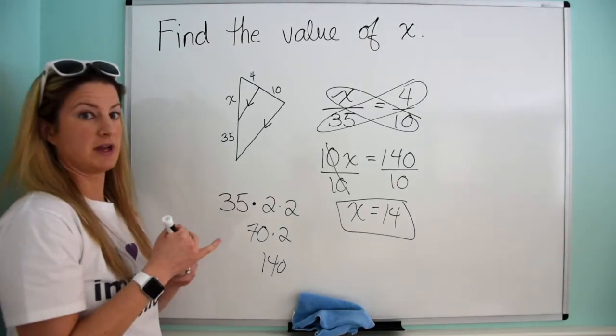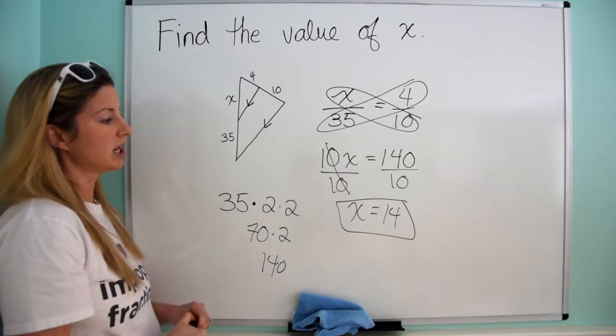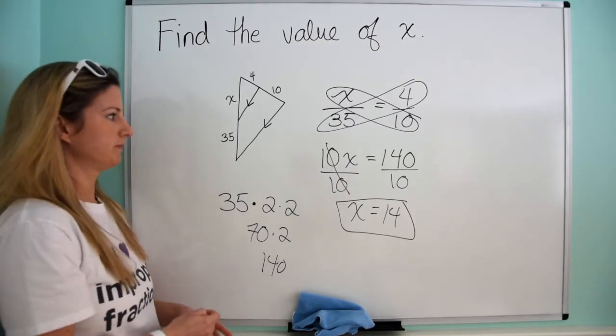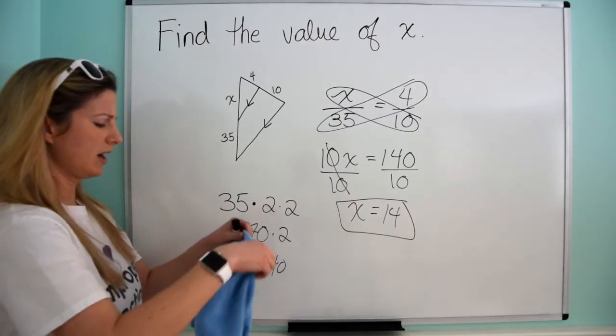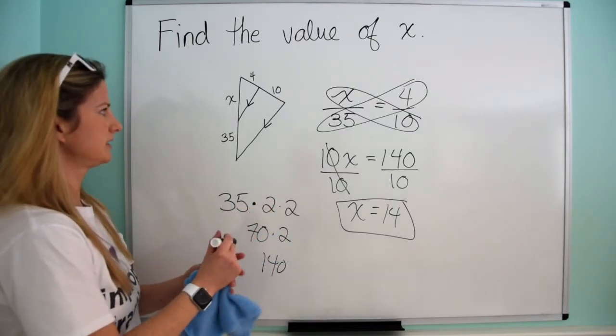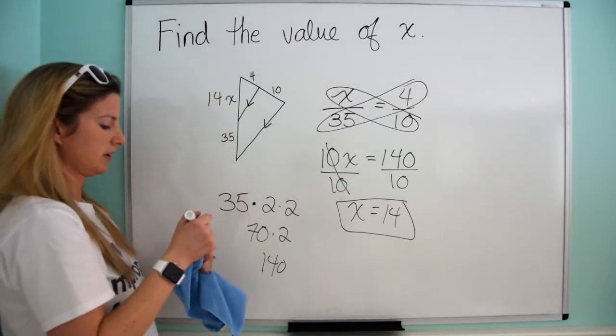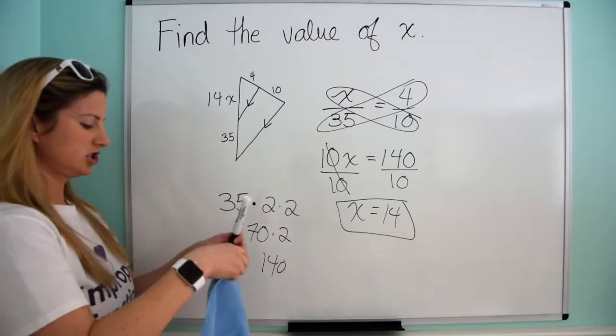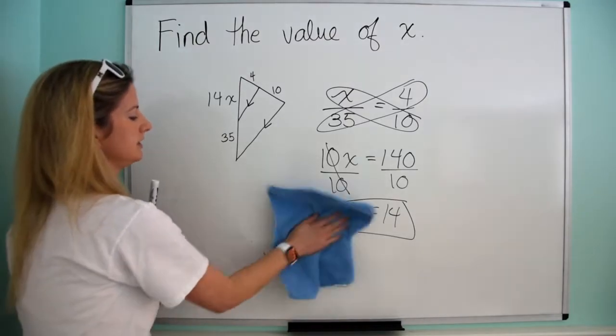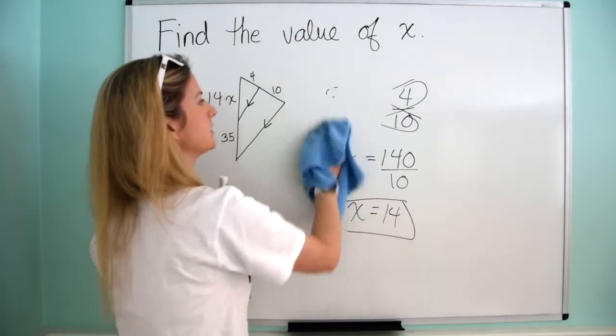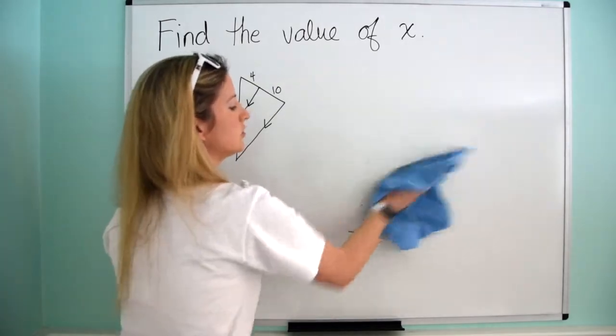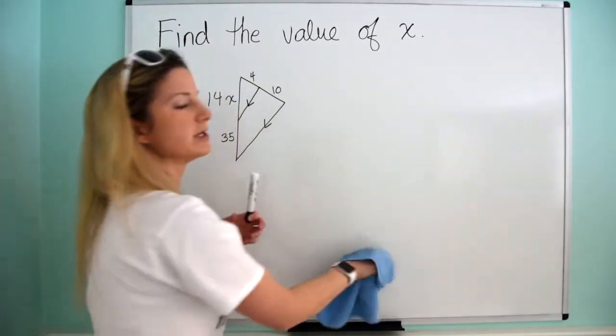Now, something that I want to do in this video that I didn't do in the last one, which I think is important, is to show you how to check your work. So we just established that x was 14, I'm going to write 14 over here. Now we're going to check that our two ratios are indeed equal. Because remember, it is so important to always check your work.